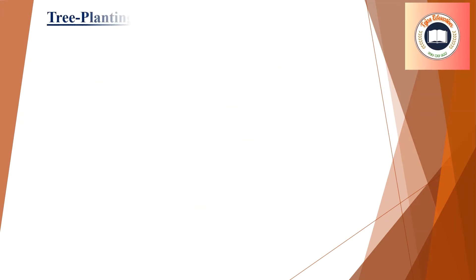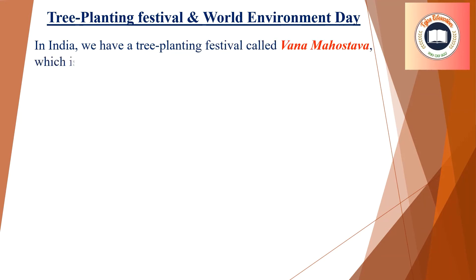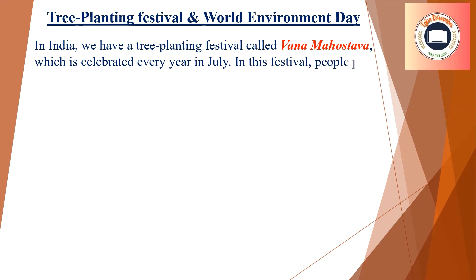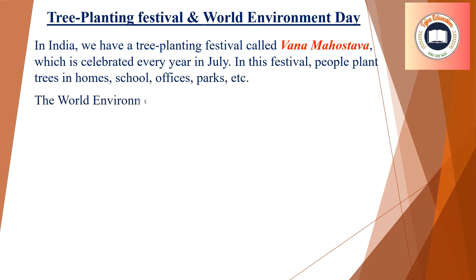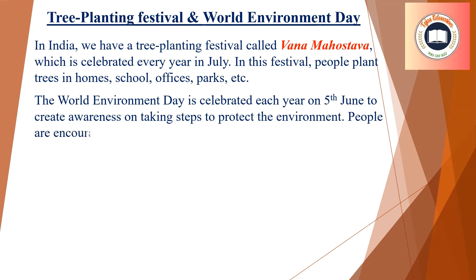Tree planting festival and World Environment Day. In India, we have a tree planting festival called Vana Mahotsava which is celebrated every year in July. In this festival, people plant trees in homes, schools, offices, parks, etc. The World Environment Day is celebrated each year on 5th June to create awareness on taking steps to protect the environment. People are encouraged to plant more trees all over the world.